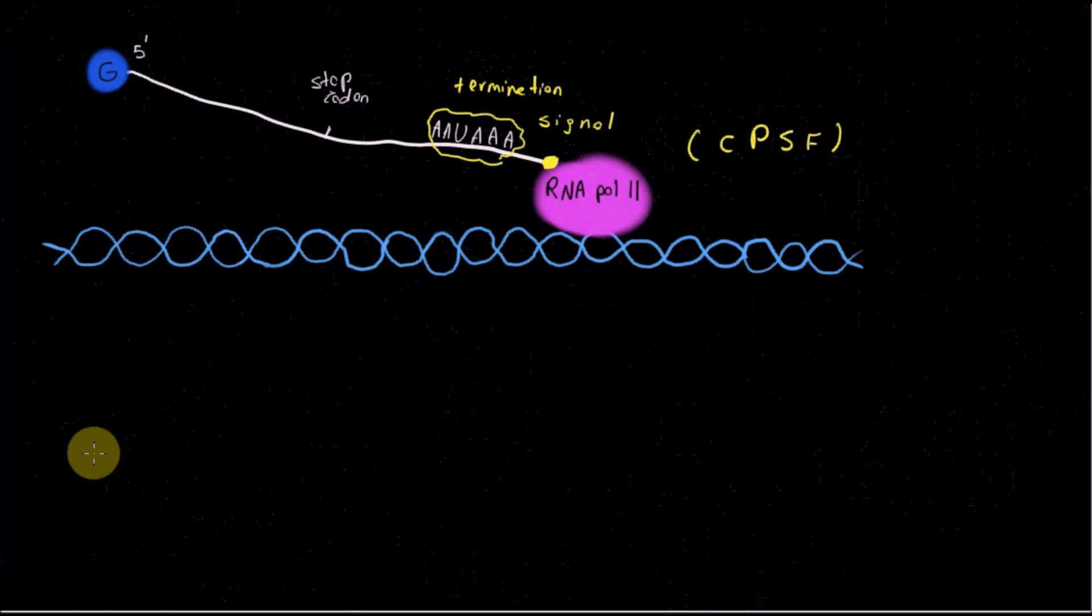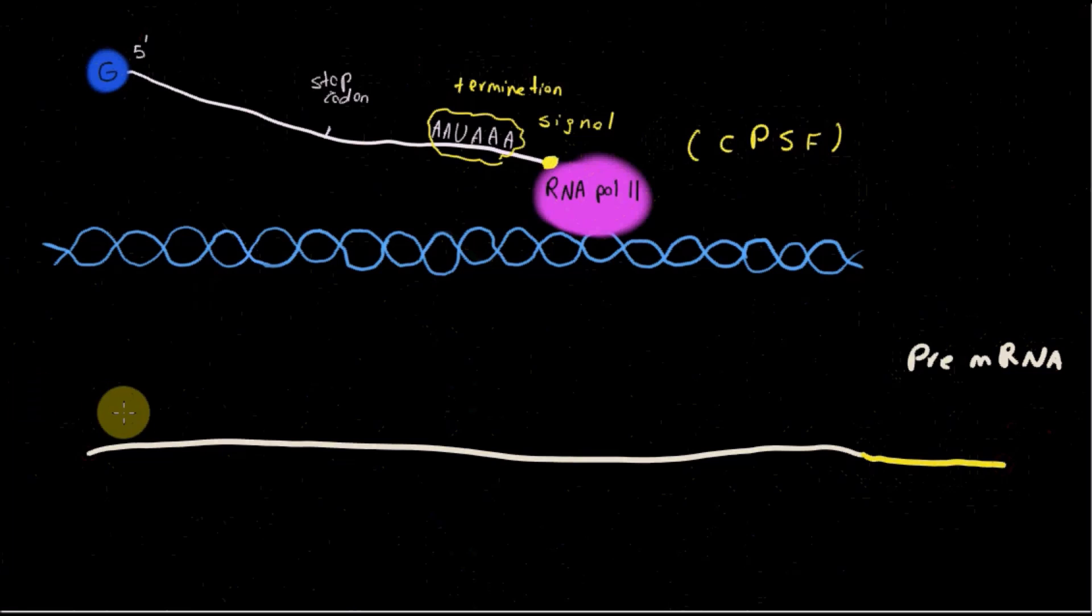Right after cleavage, something else happens. If this is our pre-mRNA, an enzyme called polyadenylate polymerase adds about 250 adenosine monophosphates to the free 3' end of pre-mRNA. This is the 5' end. This one was 3' end. And this is called polyA tail. And of course, we have our guanine cap here.